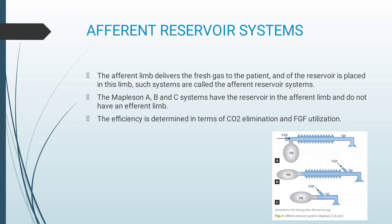Mapleson C is identical to Mapleson B except that the corrugated tubing is omitted. The efferent reservoir systems can be used during spontaneous respiration, and require at least two to three times the minute ventilation as fresh gas flow to avoid re-breathing. The main problem with these systems during controlled or assisted ventilation is that as pressure remains low during exhalation, no gas escapes through the APL valve, and all the gases — both dead space and alveolar gas — remain in the corrugated tubing and are delivered to the patient during the next inspiratory phase.